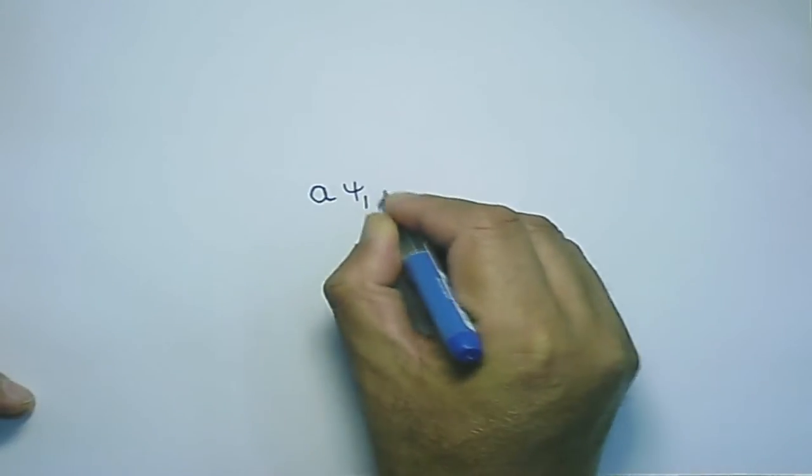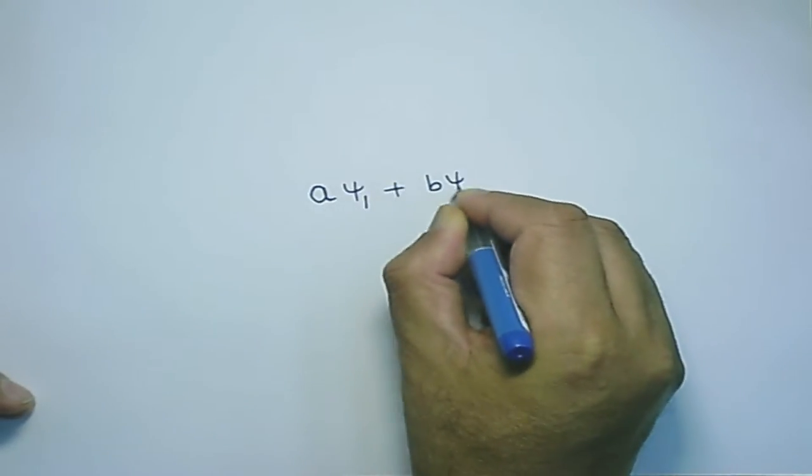If superposition is not allowed, it means this wave equation will never produce interference or diffraction, because all these things are based on the fact that if there is a disturbance psi 1 and another disturbance psi 2, then psi 1 plus psi 2 is also a disturbance. Therefore, in general, A psi 1 plus B psi 2 must also be a solution of this particular wave equation.